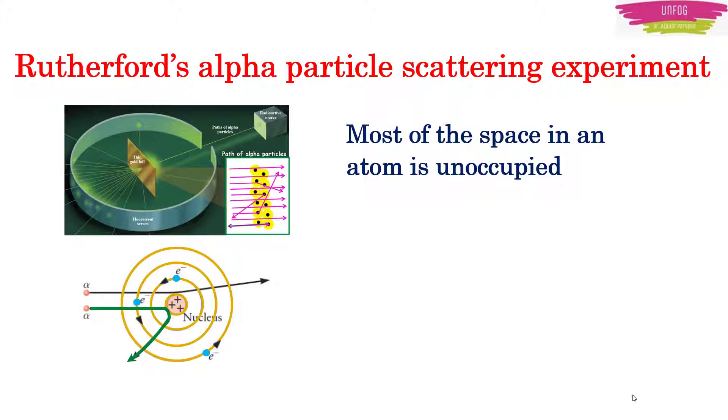And this experiment also concluded that the size of the nucleus is between 10^-15 and 10^-14 meter. That is the nucleus is so small that there are no chances of the electron being present in the nucleus.